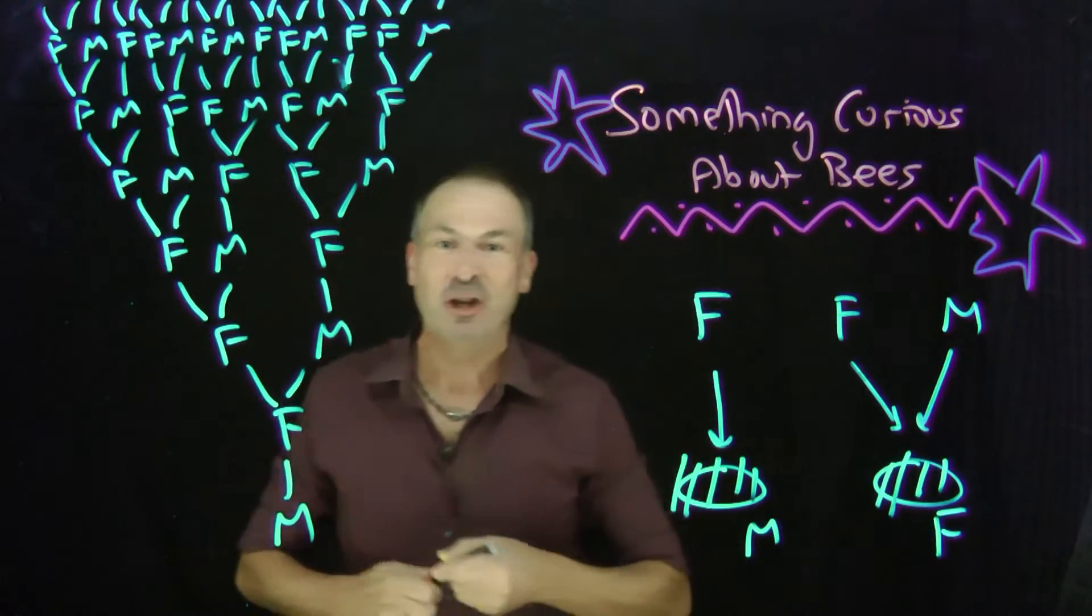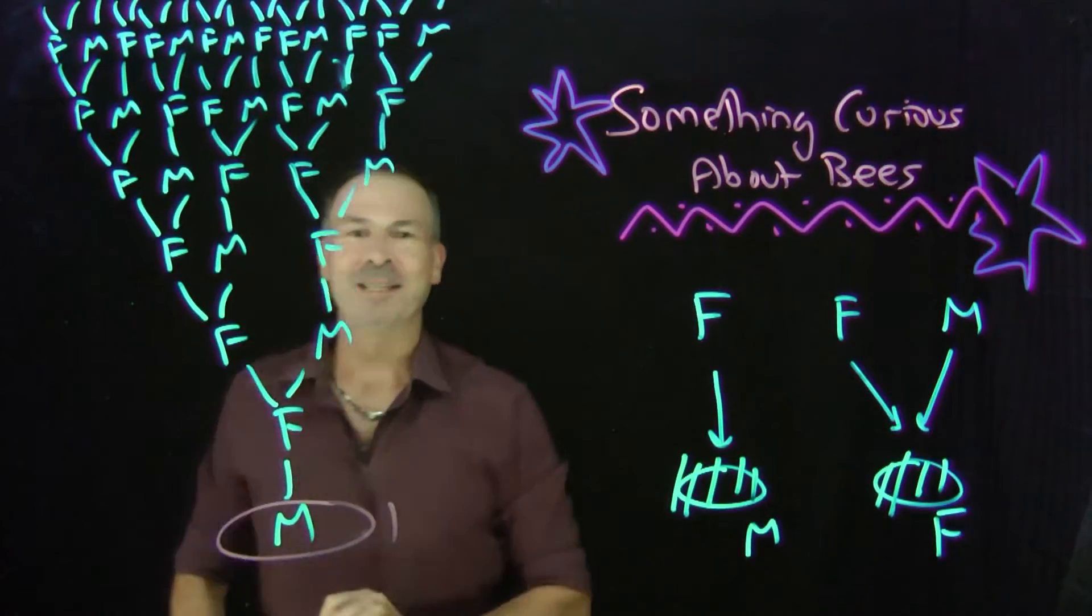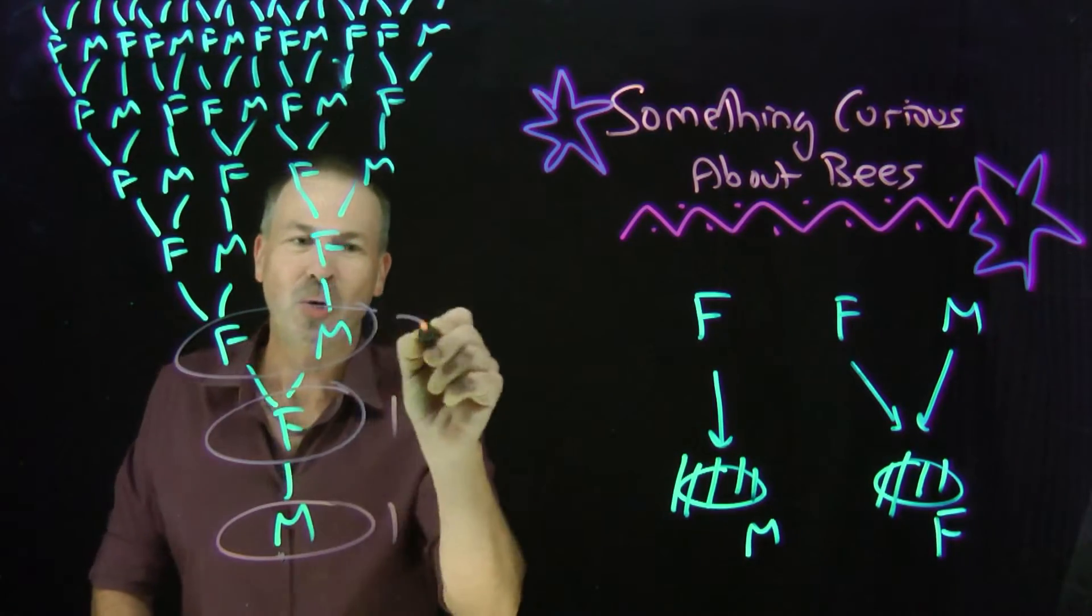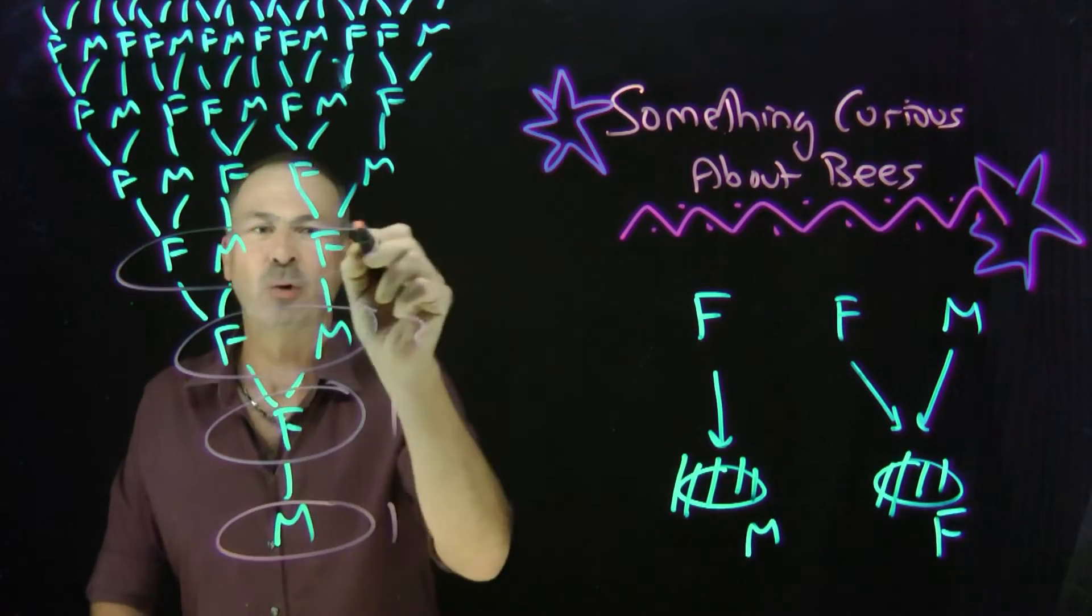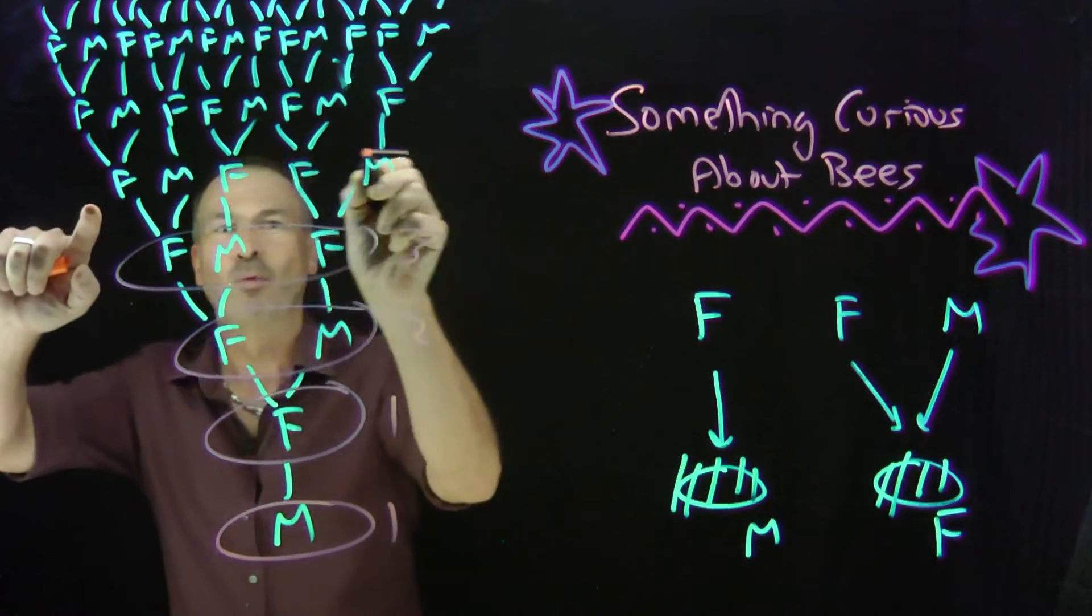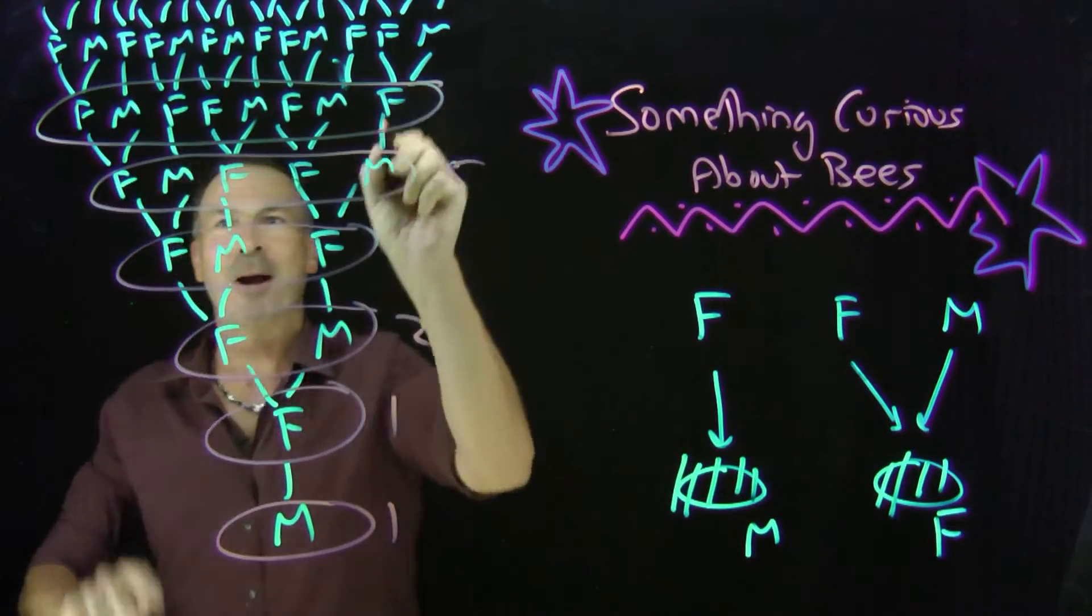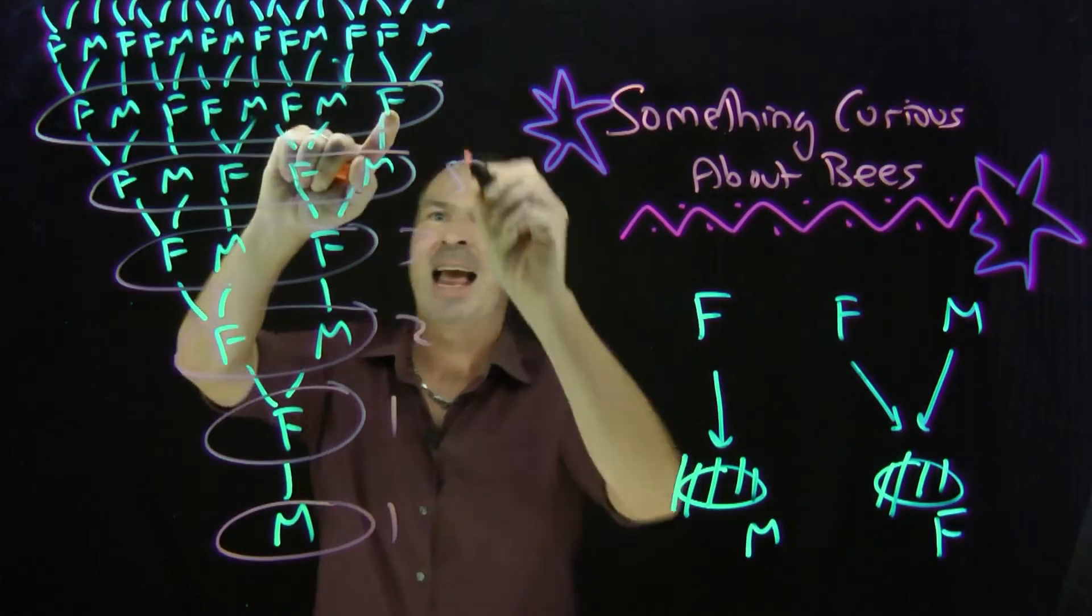Let's count the number of bees in each generation. We start with one single bee, which has one parent. That bee has actually two grandparents and three great grandparents. The number of great great grandparents is five. The number of great great great grandparents is eight.